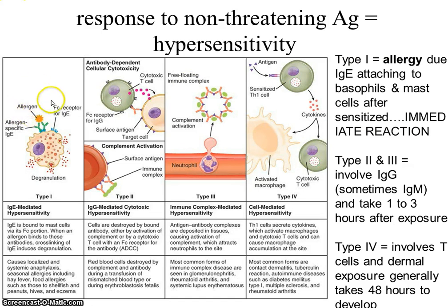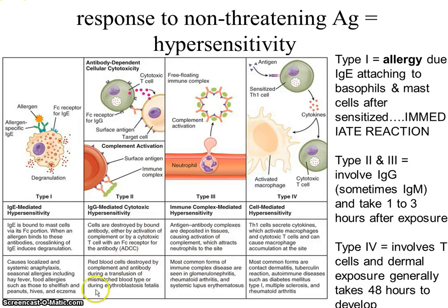The problem with the allergen is that it was not associated with an organism that would enter and divide and make you sick - it was just a chemical that entered the body: animal dander, mold, mildew, things like that. The body mistook it, and specifically the B cells. Type 2 and 3 involve immunoglobulin G and sometimes M - different classes of antibodies - and will take longer to develop. Type 2 and 3 are very similar, and we look at the response in red blood cells with a mismatch for Type 2.